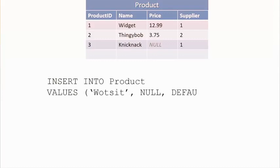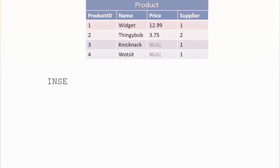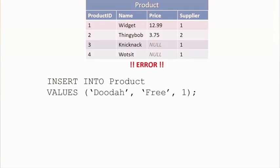So in this case I've just inserted into name — I haven't specified anything for product ID because that's an identity, nothing for price which allows nulls so we get null, and nothing for supplier which doesn't allow nulls but does have a default value of 1 — so we get the default. If I insert the wrong data type, say the word 'free' instead of a numeric price, I get an error. And if I specify null for supplier, which doesn't support nulls, I get an error. We use these constraints to enforce data integrity.